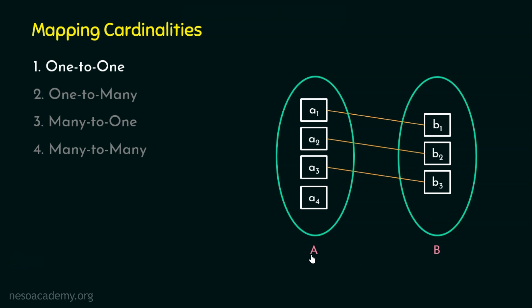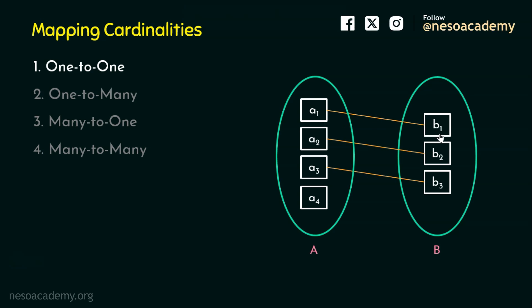For example, let's take entity set A as the department and entity set B as the head of the department. One department is managed by one head of the department — one department is associated with one manager only. For instance, the finance department is managed by Tom. One manager, one department; or one department, one head of the department. This is called one-to-one mapping cardinality. In diagrams, the relationship set is not shown here for simplicity, but it will be shown when we cover ER diagrams.